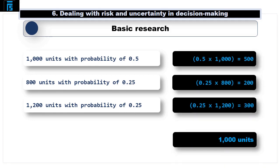The expected value is calculated as 0.5 times 1000 plus 0.25 times 800 plus 0.25 times 1200 is 1000 units.